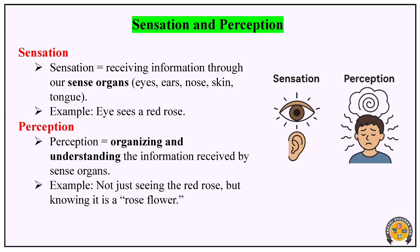What is perception? Perception is the information we have received, organized by the sense organ. Organizing and understanding the information received by the sense organ is perception. For example, with sensation and perception — if I see a red rose, my eyes receive the visual data. That is sensation. But if I organize it and understand it — knowing it is a rose flower — that is the perception and its meaning.